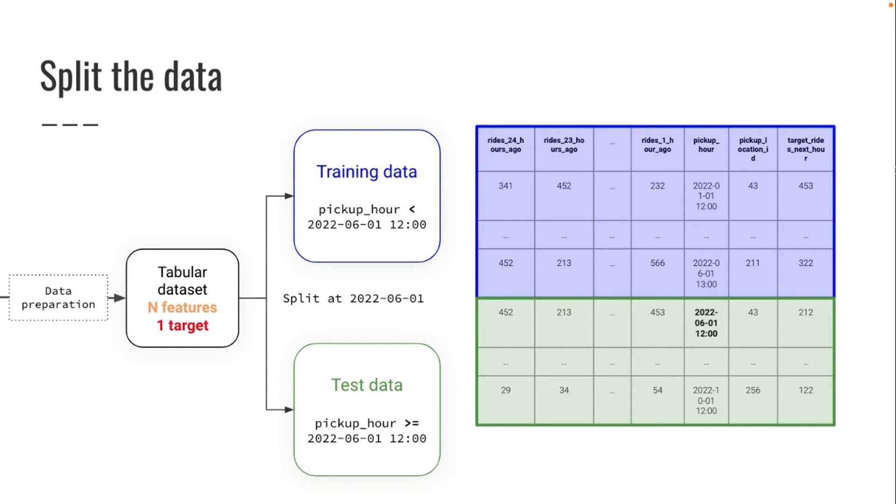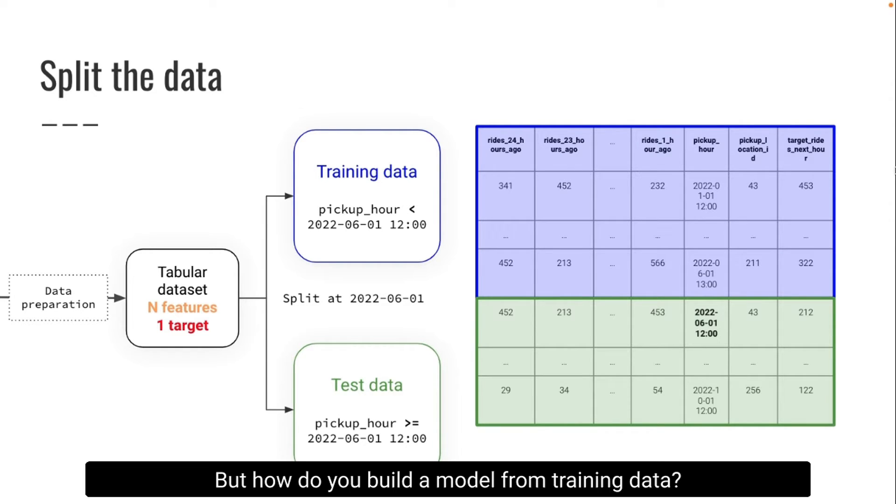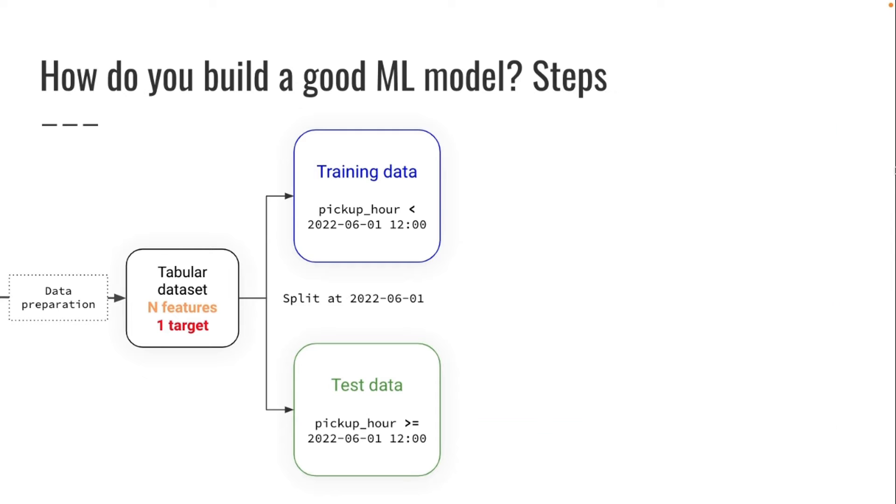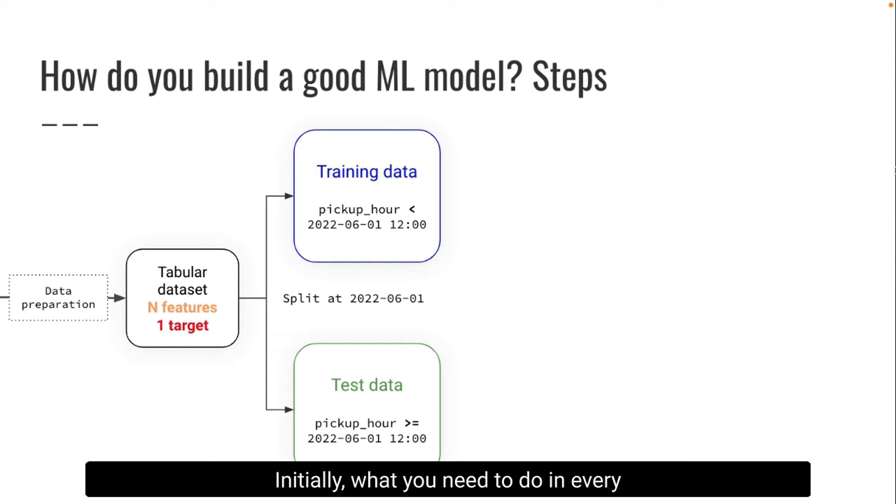But how do you build the model from training data? Initially, what you need to do in every problem is to create a baseline model. That is a simple rule that you can infer by looking at the data that uses no machine learning, that has no complexities, but you can use to obtain a baseline performance.